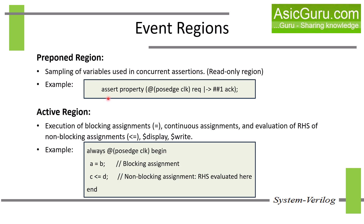In this assertion example, the signal rec is sampled in the prepone region, which ensures that the value of rec is captured before any update occurs on rec in the current time slot. So if any update occurs to rec in any other region, that won't be considered — the value is captured before any such update.